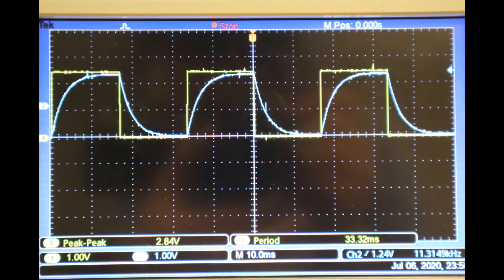Notice that as the square wave of the function generator goes high, the voltage of the circuit begins to climb. This is because the capacitor is becoming charged. Then when the square wave goes to zero, which is what distinguishes a half-wave from a full-wave square function, the capacitor begins to discharge.